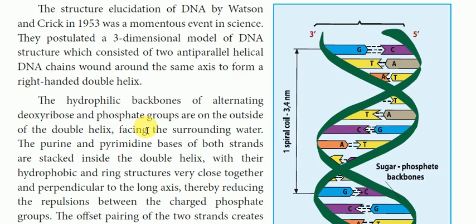The right-handed double helix has hydrophobic backbones of alternating deoxyribose and phosphate groups forming the backbone, facing the surrounding water. The purine and pyrimidine bases of both strands are stacked inside the double helix, with their hydrophobic ring structures very close together and perpendicular to the long axis.